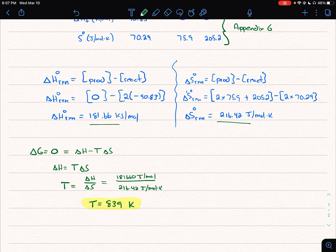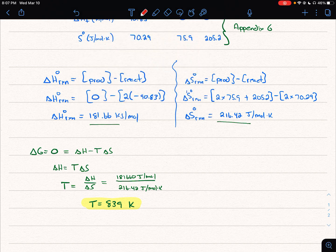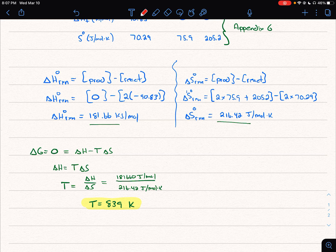Now we have to think about what that number means. That's the temperature where we're changing from non-spontaneous to spontaneous. So temperatures above 839 Kelvin will be spontaneous.